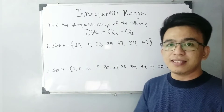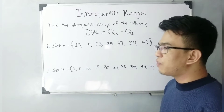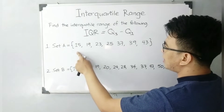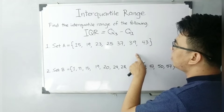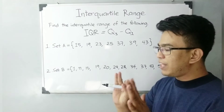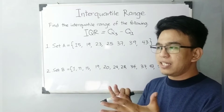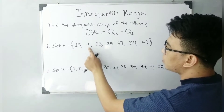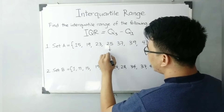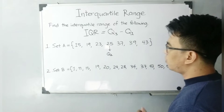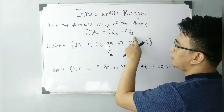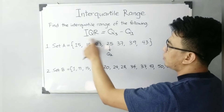We have seven elements in set A. Since the number of elements is an odd number, we need to find first your median or quartile number two. If we have seven elements, the median is the fourth element — that fourth element is your quartile two. We solve for quartile two because we need to find quartile three and quartile one in order to solve for the interquartile range.